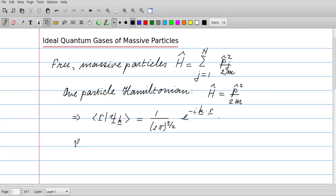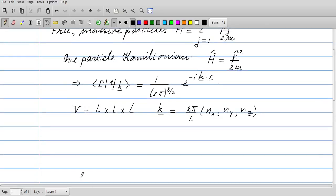For a volume which is cubic, l by l by l, we know that the k's have to form 2π over l, and then there are integer indices nx, ny, and nz. That implies if we sum over the k vectors, we can replace that by v, which is l cubed over 2π cubed, and then integrate over the 3k directions.